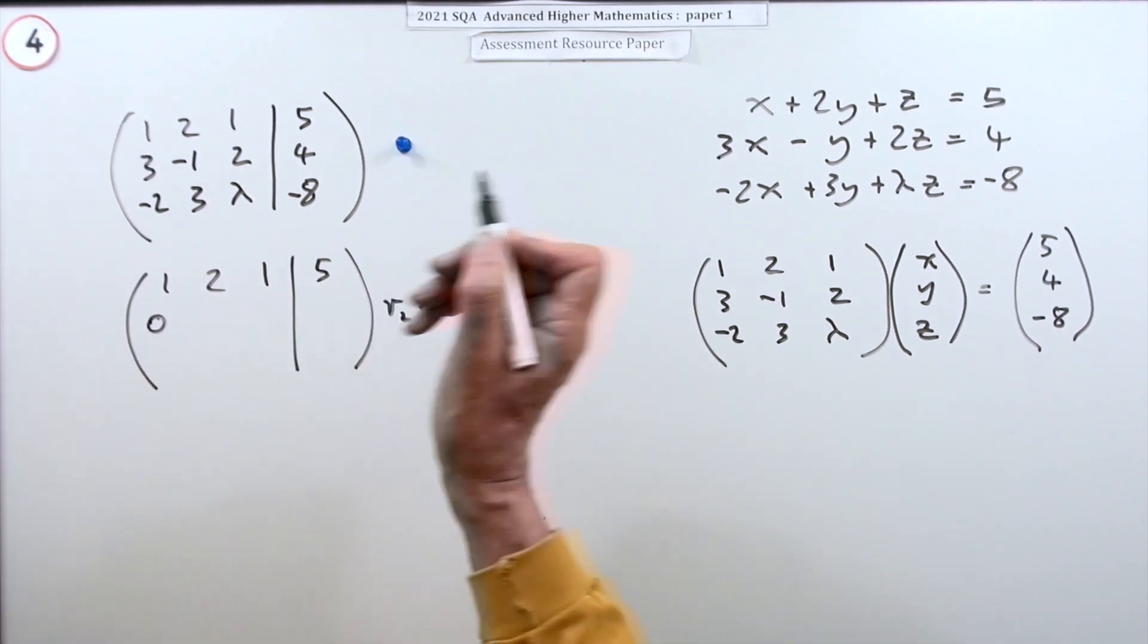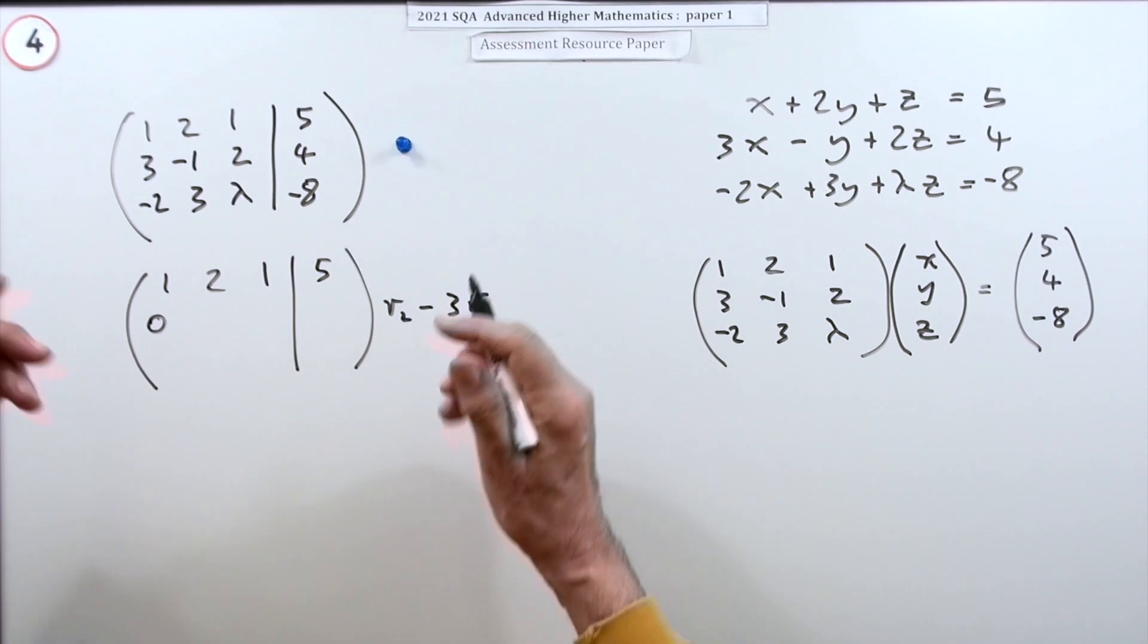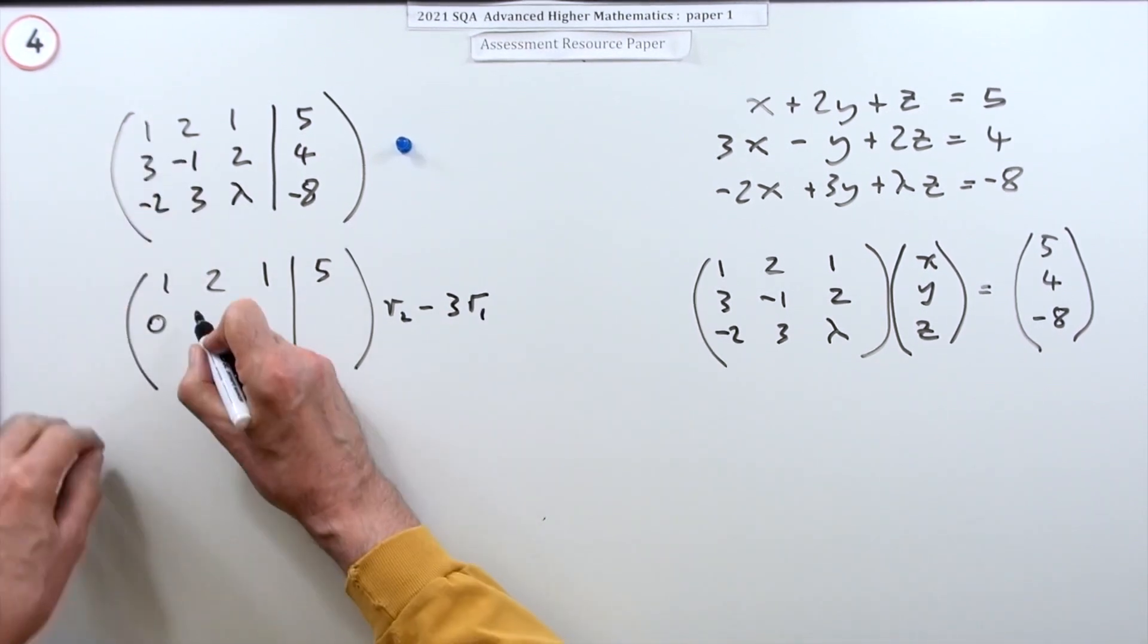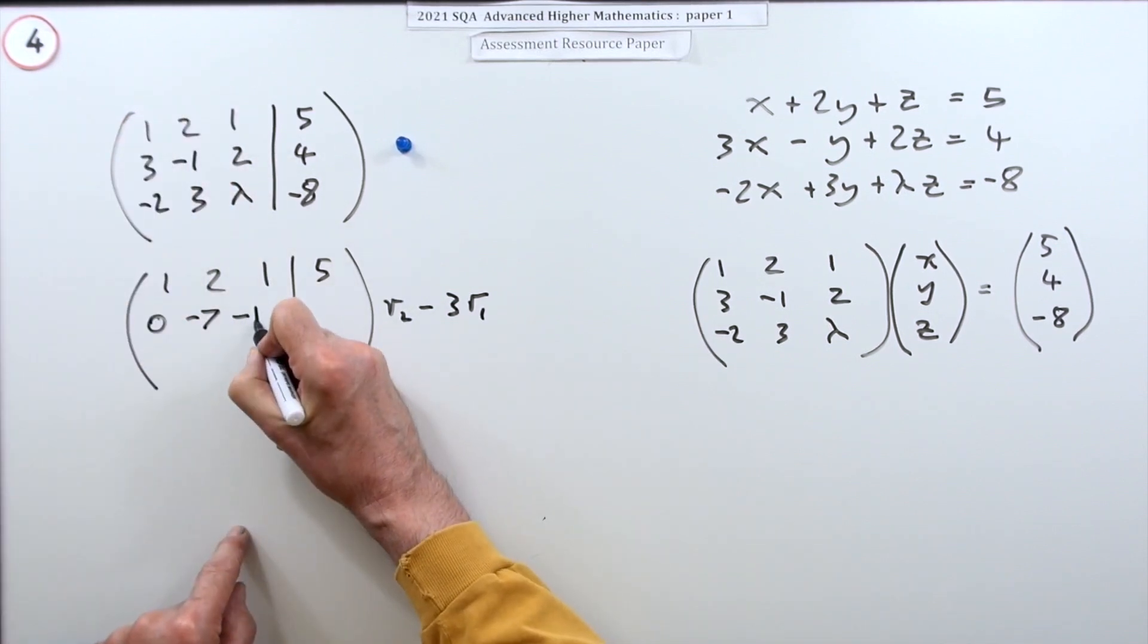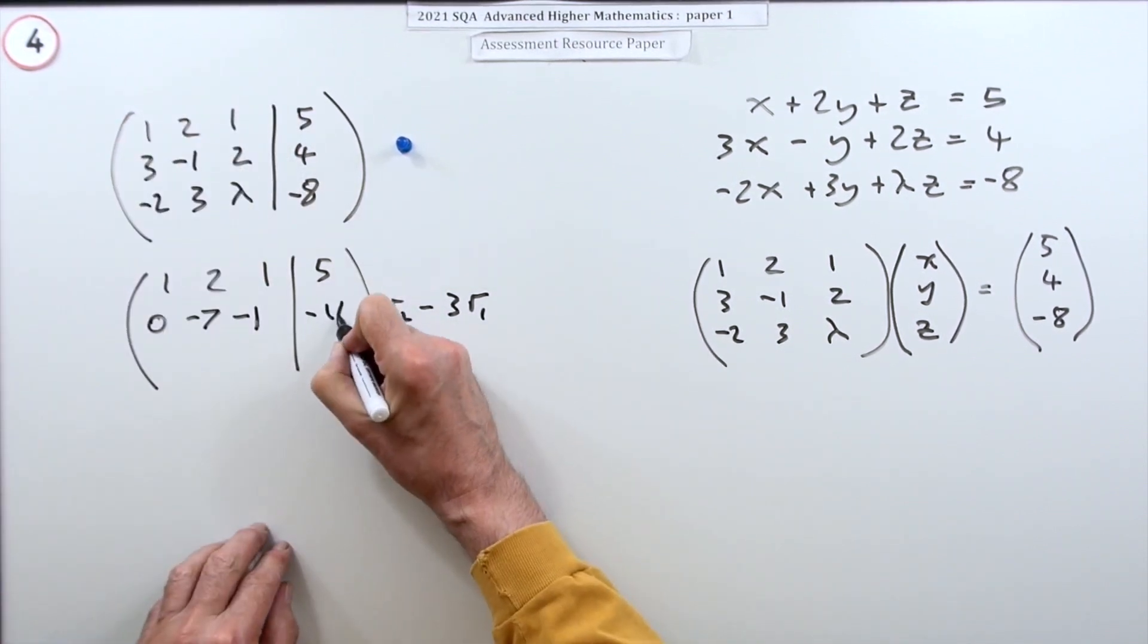I'm going to take the value in row two and subtract three of the corresponding value in row one. So three take away three, that's zero because that's what I want. And then the rest just are what they are. Negative one take away six, negative seven. Two take away three, negative one. Four take away fifteen, negative eleven.